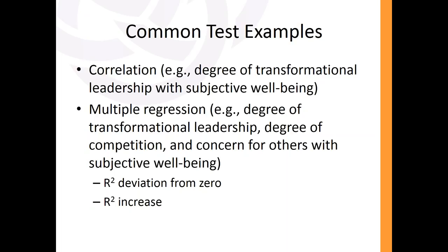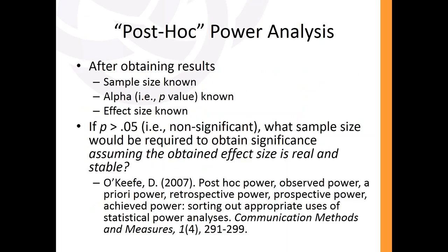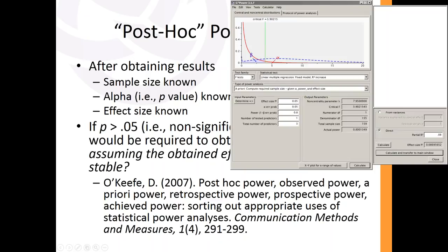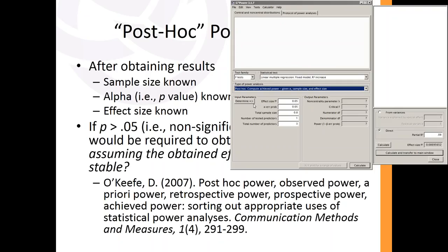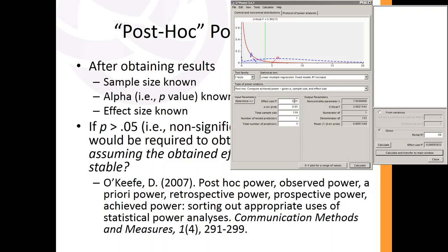Finally, a note on post-hoc power analysis. In G-Power you can select 'Post hoc' as the analysis type, but this is somewhat redundant with your p-value once the study is already conducted. You input the effect size obtained, your sample size, and number of predictors, and it returns the power you had. If your p-value was 0.05 and your effect and sample size match, then the power value it returns reflects the precision of your completed study.